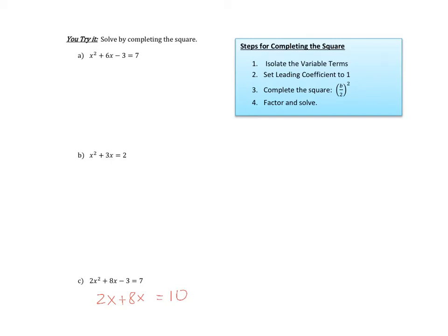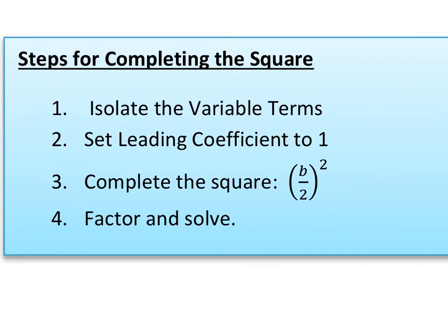Here are a few examples of how to complete the square to solve for a variable. Some steps to remember: we want to isolate the variable terms, set the leading coefficient to 1 by dividing if it's not already 1, complete the square by adding b over 2 squared, and then we factor and solve.